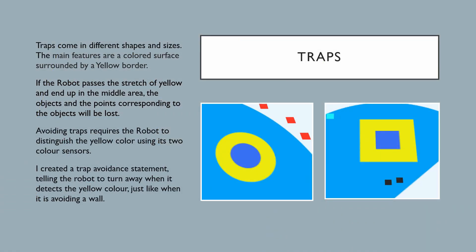Now for traps. Traps come in many different shapes and sizes. The main features are a colored surface surrounded by a yellow border. If the robot passes the stretch of yellow and ends up in the middle area, the objects and the points corresponding to the objects will be lost. Avoiding traps requires the robot to distinguish the yellow color using its two color sensors. I created a trap avoidance statement telling the robot to turn away if it detects a yellow color, just like when it's avoiding a wall.